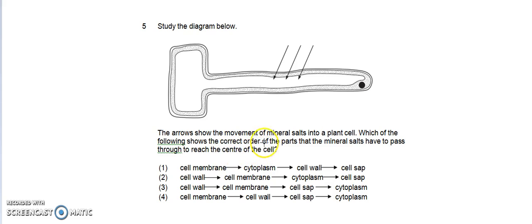the center of the cell? So in a plant cell, the outermost layer will be the cell wall. So knowing this, we can already eliminate option one